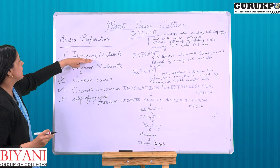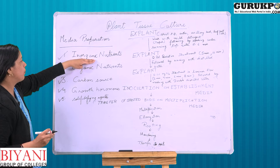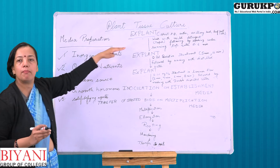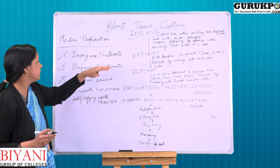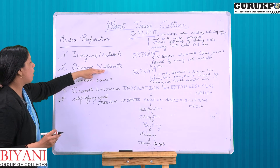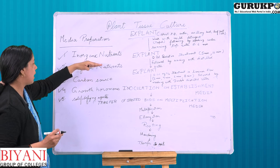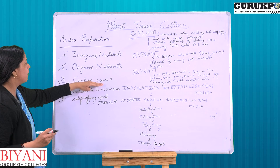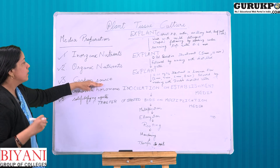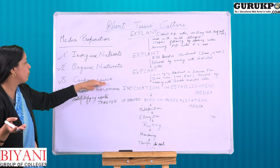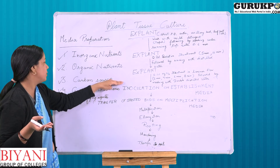Inorganic nutrients include all the mineral components, including micronutrients and macronutrients. Organic nutrients include all the organic components like amino acids, carbon sources, etc. The carbon source used is generally glucose and sucrose, which provide energy.